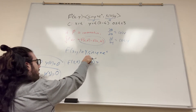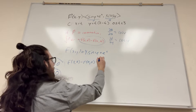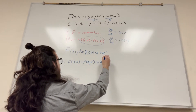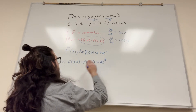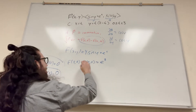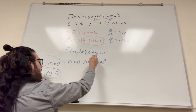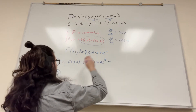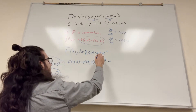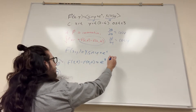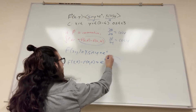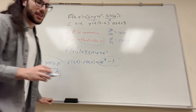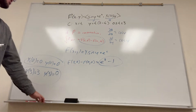Plugging in (3, 0): x sine y gives 3 times sine of 0, which is 0, plus e to the 3. So that's e to the 3. Then f(0, 0) is also 0, but we subtract e to the 0, which is 1. So the answer is e to the 3 minus 1. That's how you solve this line integral problem using the fundamental theorem of line integrals.